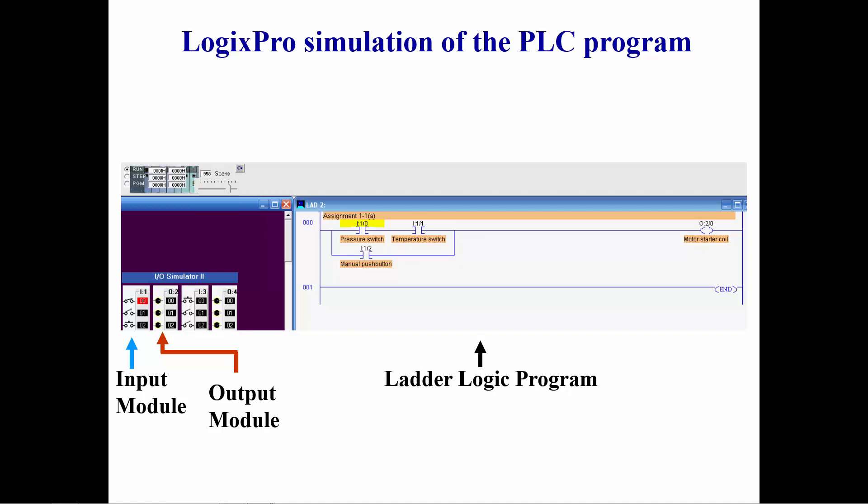Also the output instruction O colon 2 slash 0 representing the motor starter coil is now highlighted indicating that the output is energized because we have logic continuity from left to right. This is a logical AND of the pressure and temperature switch. When we open the temperature switch the output is turned off.